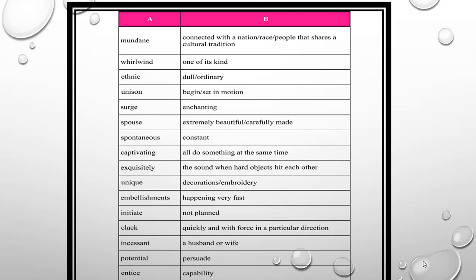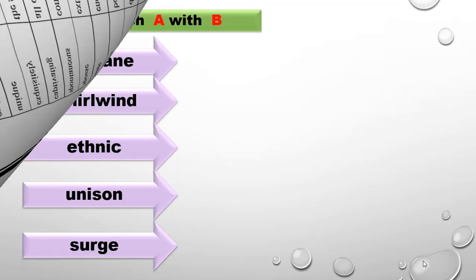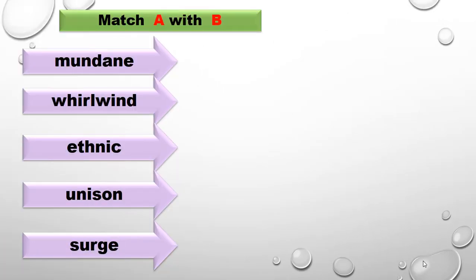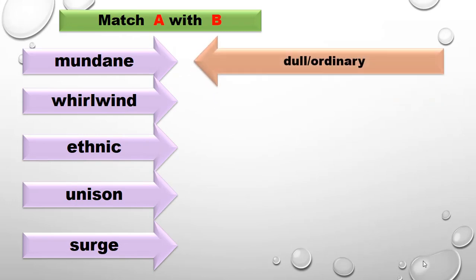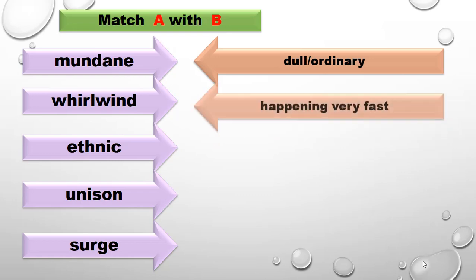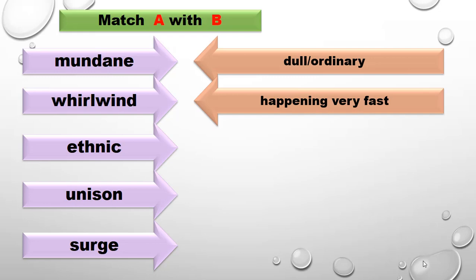Let's start. The first word is 'mundane.' Mundane means dull or ordinary. The second word is 'whirlwind.' Whirlwind means happening very fast.